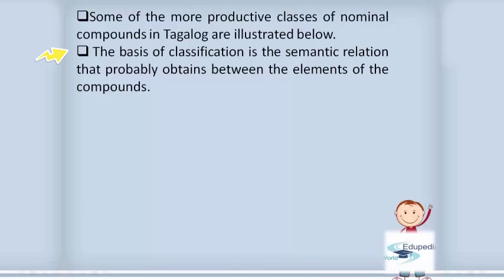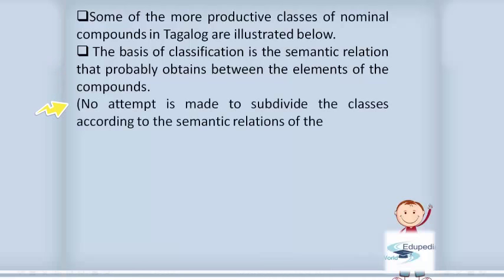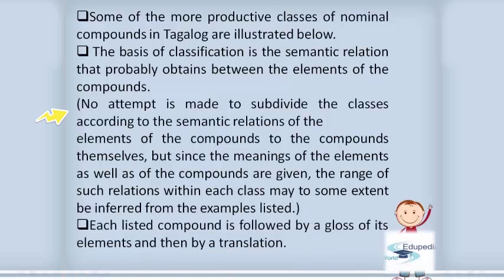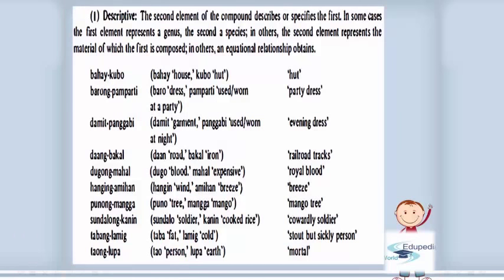The basis of classification is the semantic relation that probably obtains between the elements of the compounds. No attempt is made to subdivide the classes according to the semantic relations of the elements to the compounds themselves, but since the meanings of both the elements and the compound are given, the range of such relations within each class may to some extent be inferred from the examples listed. Each listed compound is followed by a gloss of its elements and then a translation.